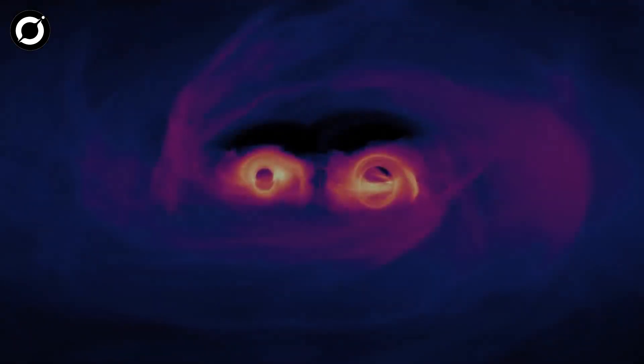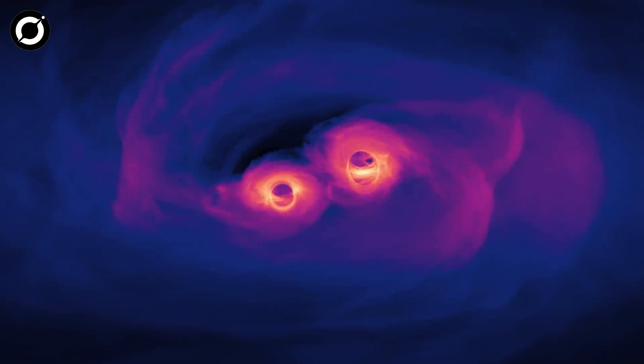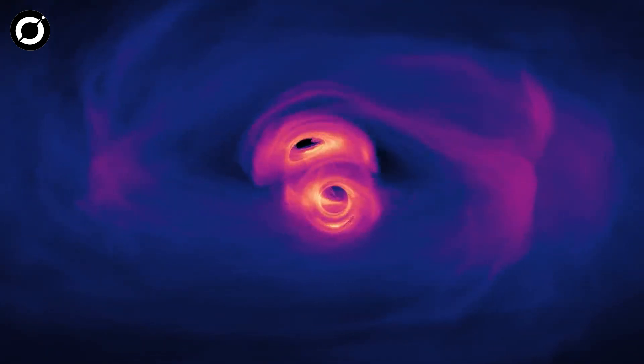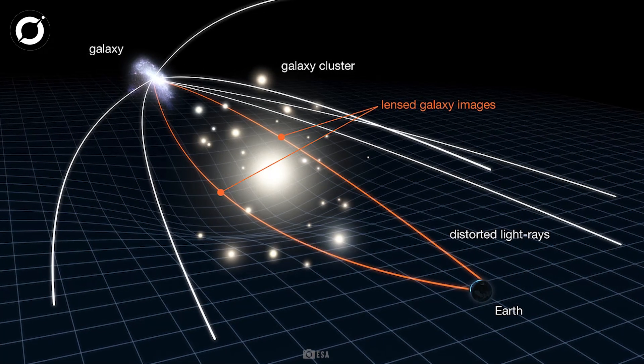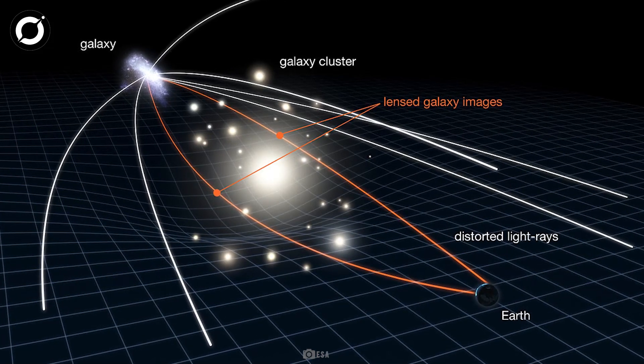Thanks to the way the gravity of a massive object, like a cluster of galaxies, distorts the space that distant light travels through.